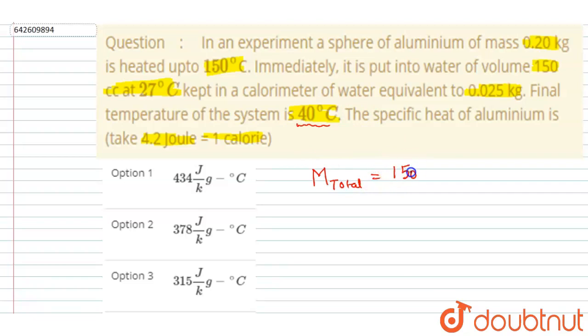150 cc, which is 150 gram, and this is in kilogram, so I will multiply it with 1000, so I will get 25. So this will be the total mass, 175.